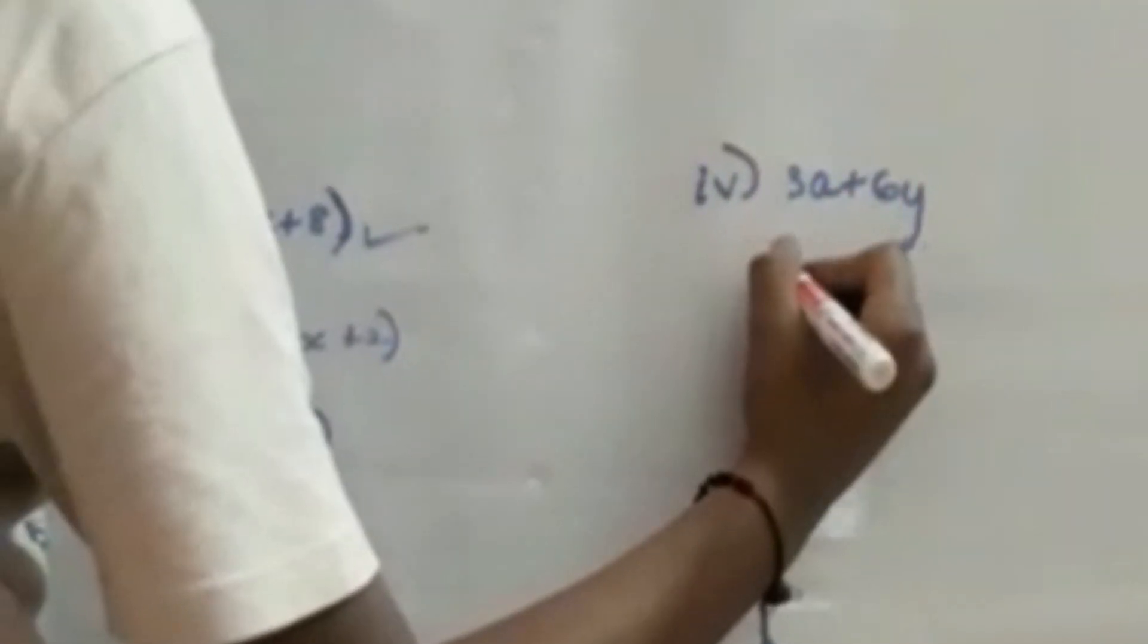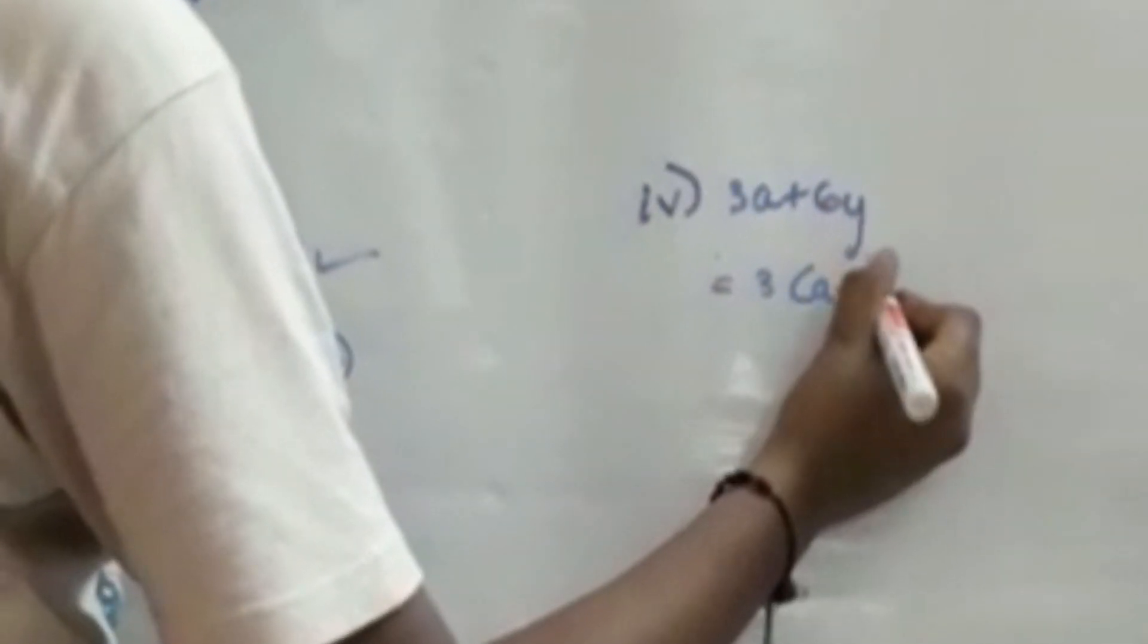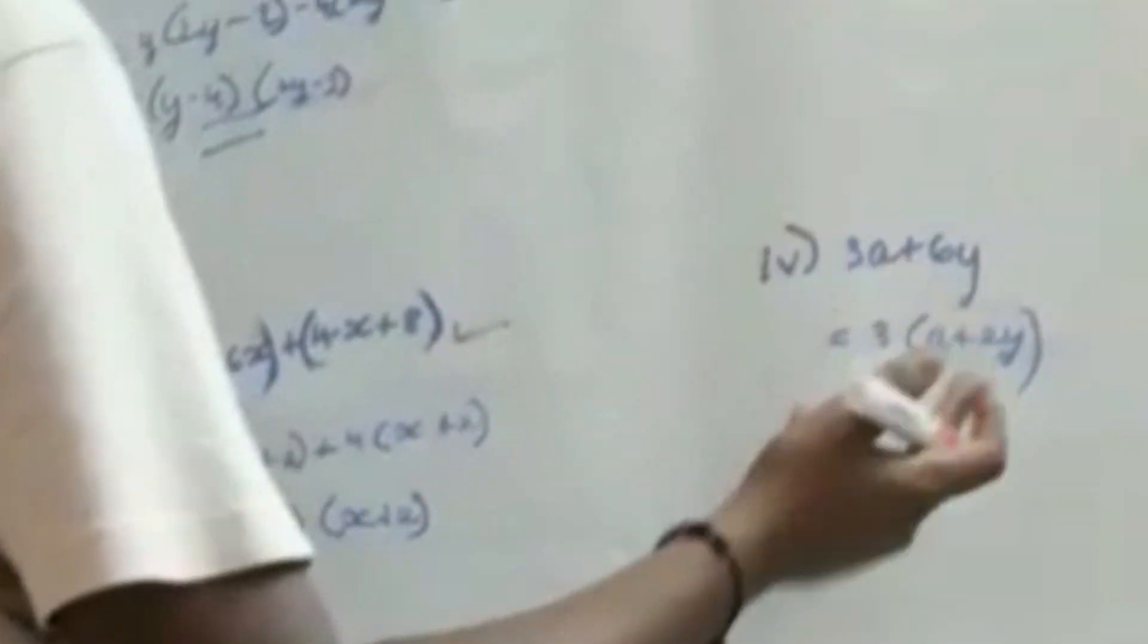And for the last example, this is the factorized form of this equation. Here I get the value 3(x + 2y). 3 divided by 6 is 2.